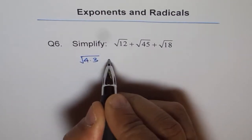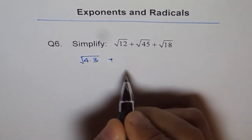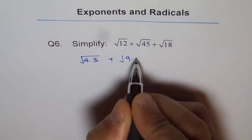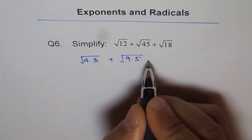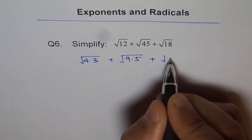So that is square root of 12 plus 45 as 9 times 5, 9 times 5, and 18 can be written as 9 times 2.